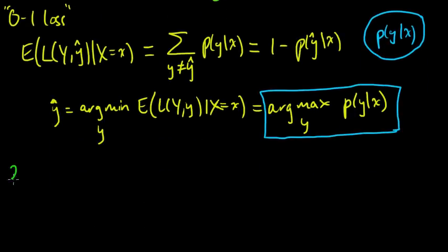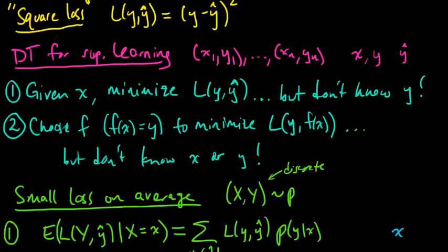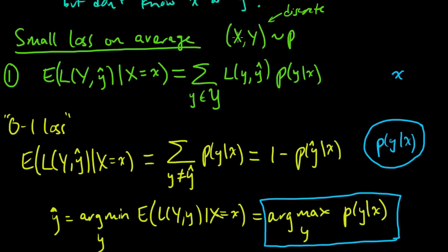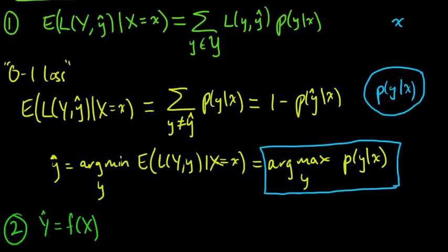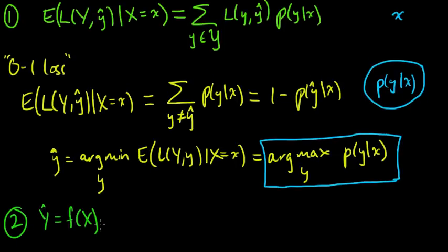What happens in Case 2? Let's pick some arbitrary f and see what happens. We'll write ŷ = f(x). We're thinking about x and y as being random — we're given an x which we have to classify, and we want to choose a good y for that x. So we have our function f which does classification or regression. Let's think about classification for now.